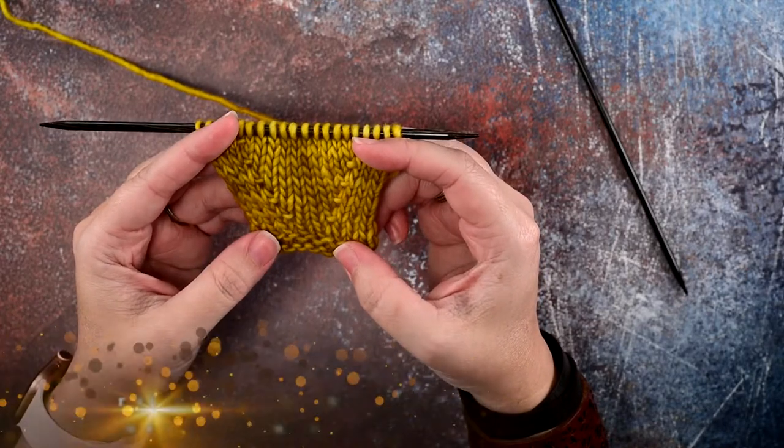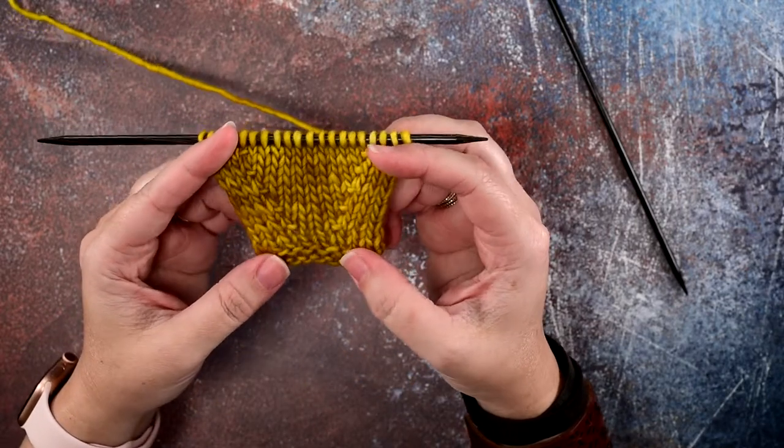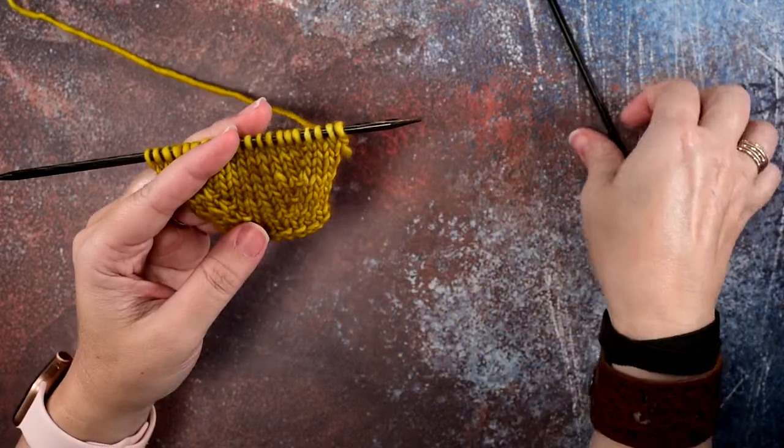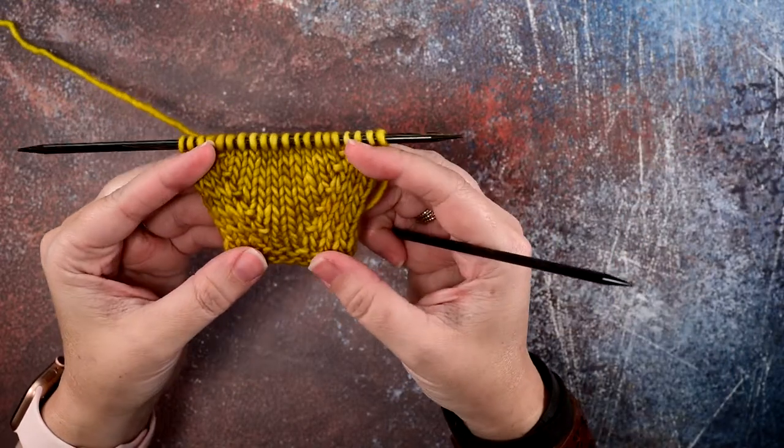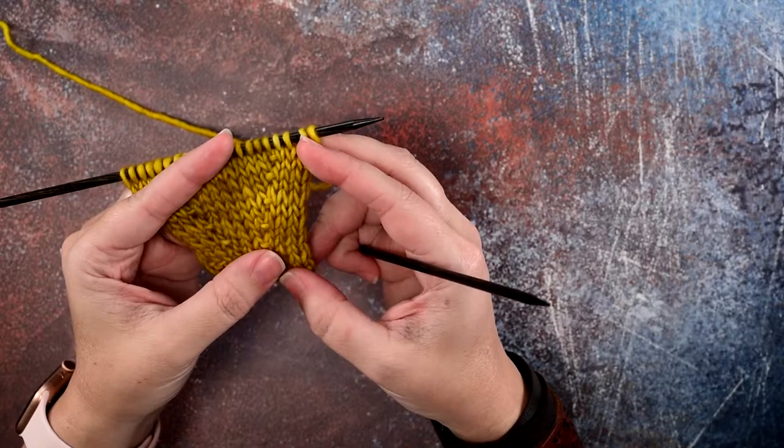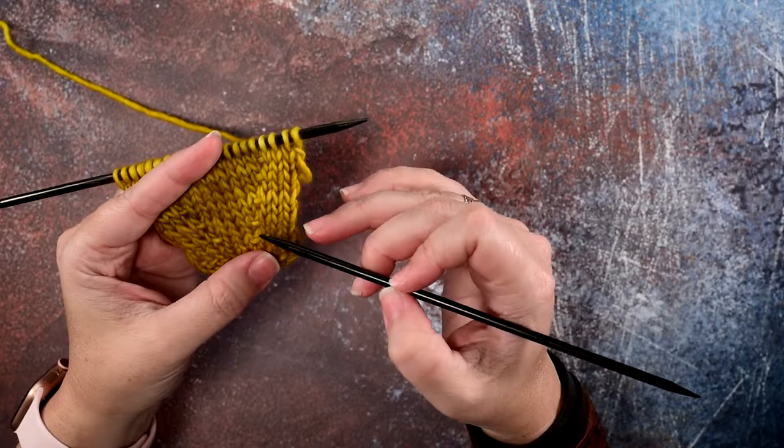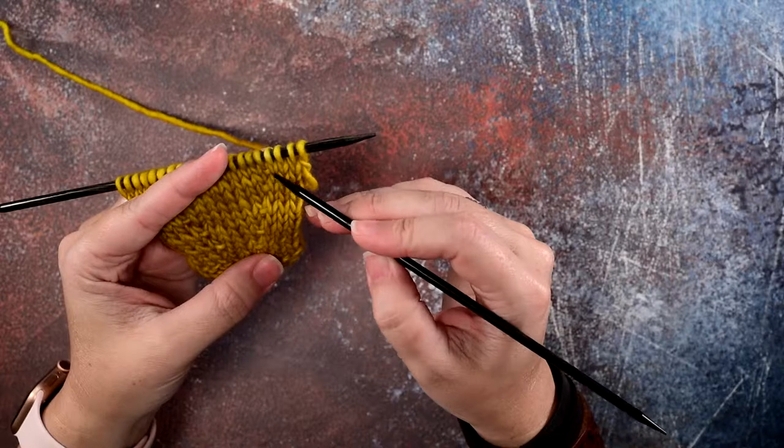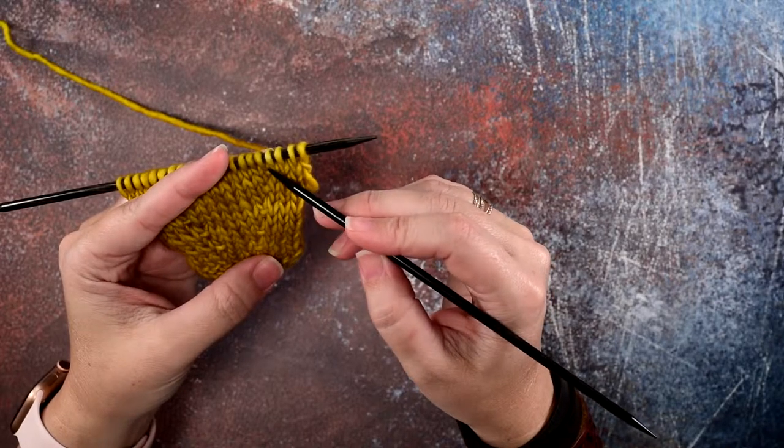I also call this a KFB mirror, and what I mean by this is when you increase in your work by one stitch. Normally, a knit front and back stitch is worked in the first stitch and then worked in the back loop of that stitch.